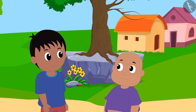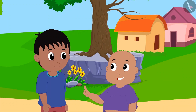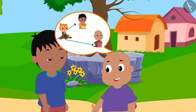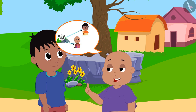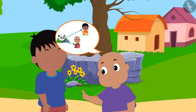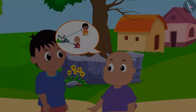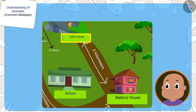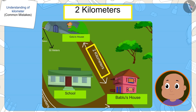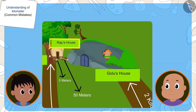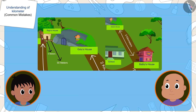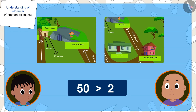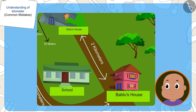Now Bablu tells Raju that even though his house is farther from Chanda's house, it is definitely closer to Golu's house. His house is two kilometers away from Golu's house, and Raju's house is 50 meters away. Bablu argues that two is less than 50, so his house must be closer to Golu's house.